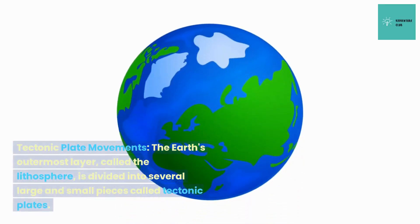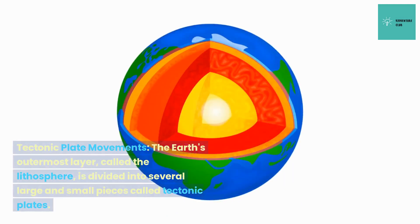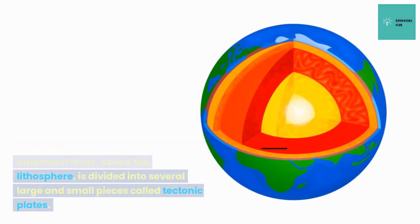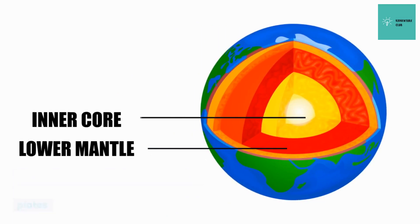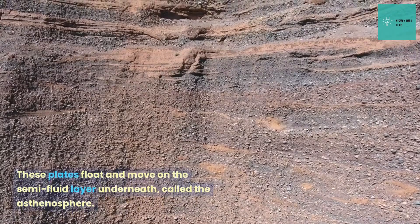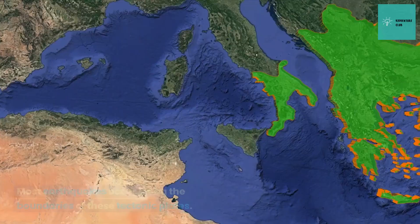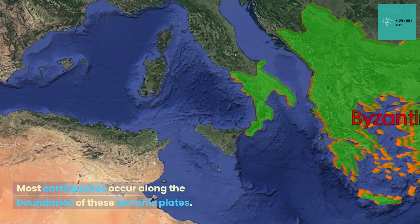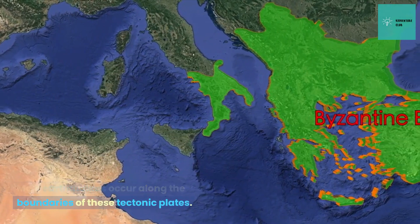Tectonic plate movements. The Earth's outermost layer, called the lithosphere, is divided into several large and small pieces called tectonic plates. These plates float and move on the semi-fluid layer underneath, called the asthenosphere. Most earthquakes occur along the boundaries of these tectonic plates.